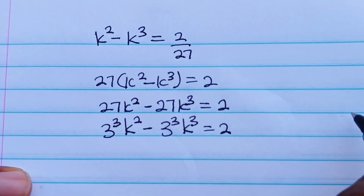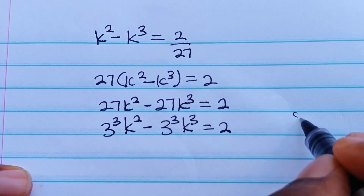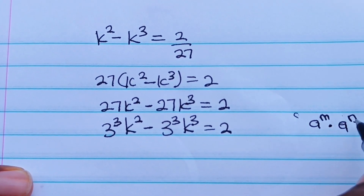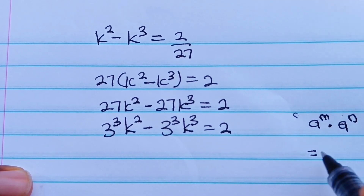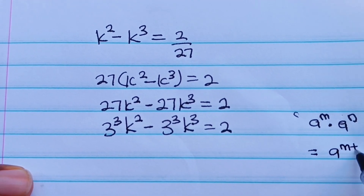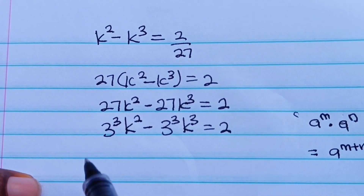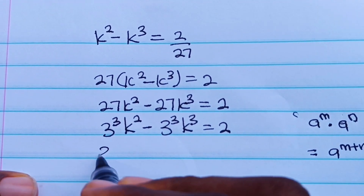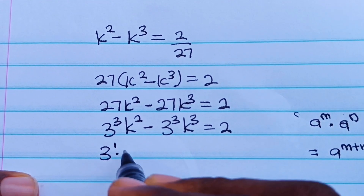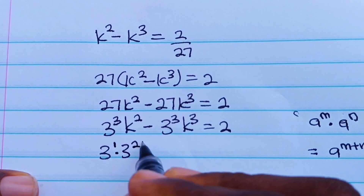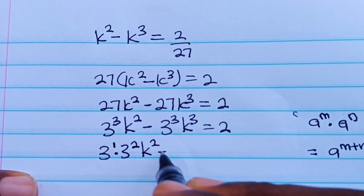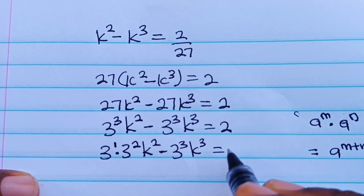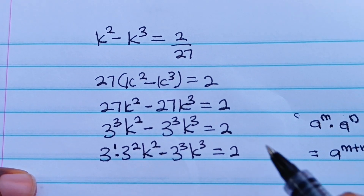Now recall that a to the power of m multiplied by a to the power of n is equal to a to the power of m plus n. So that means we can express 3³ as 3¹ multiplied by 3², right? Then k² minus 3³ · k³ is equal to 2.